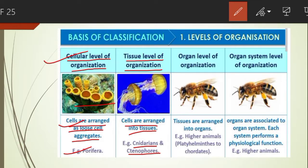The third is organ level of organization. In Platyhelminthes and other higher phyla, tissues are grouped together to form organs, each specialized for a particular function.